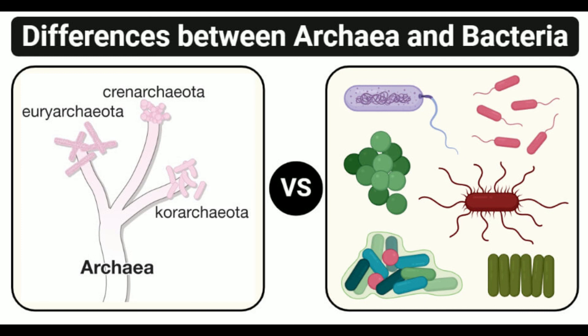Lactobacillus is a group of rod-shaped, gram-positive, non-spore-forming microorganisms. The term Lactobacilli indicates their ability to produce lactic acid as a byproduct of glucose metabolism. These organisms are mostly found in milk and milk products, and many varieties are used commercially to produce fermented products. Common species include Lactobacillus brevis, Lactobacillus casei, and Lactobacillus plantarum. These organisms are also found within the body in locations such as the intestine and vagina.